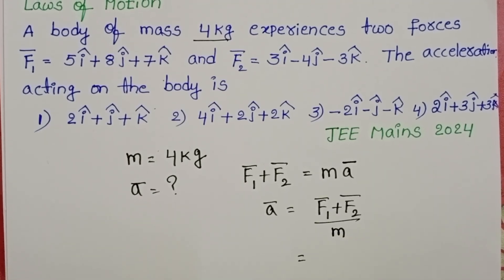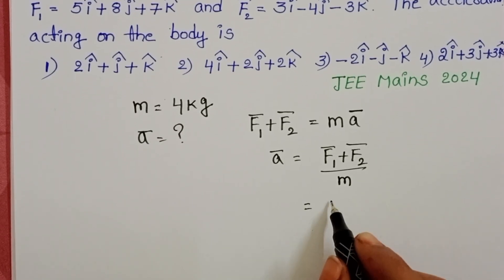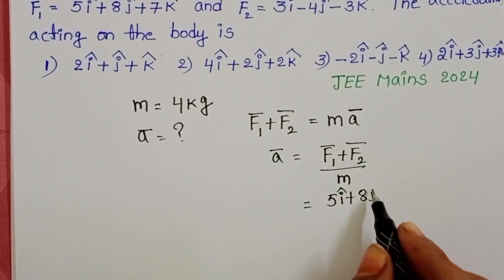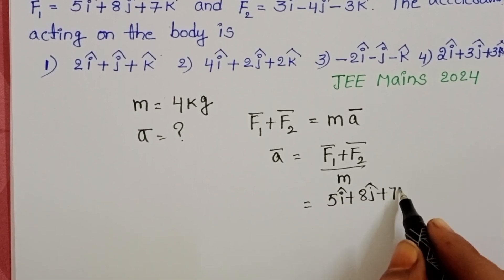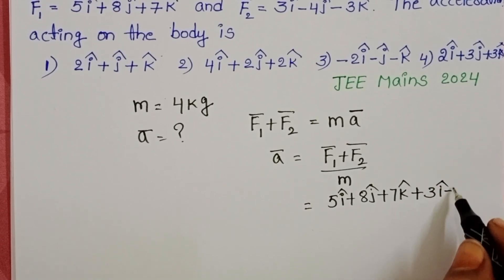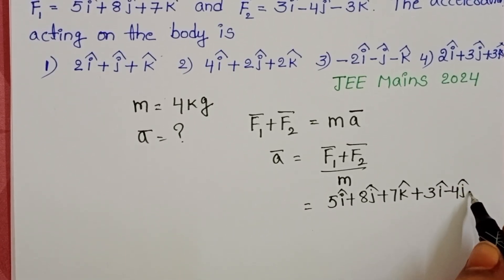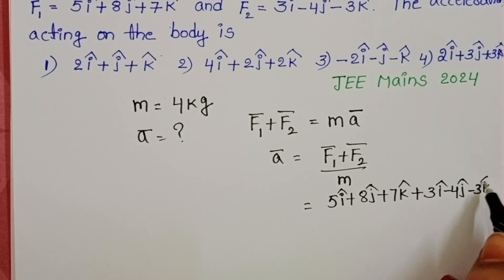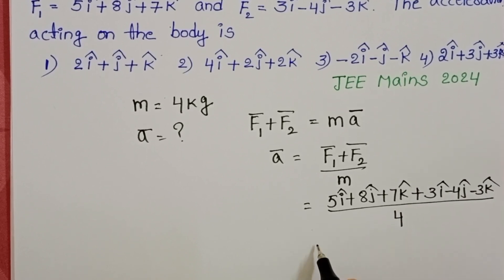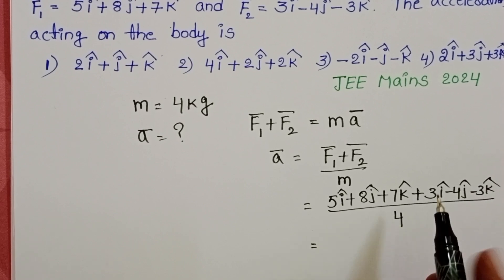Sum of the forces. First force 5i cap plus 8j cap plus 7k cap plus second force is 3i cap minus 4j cap minus 3k cap by mass of the body 4 kg. 5 plus 3,